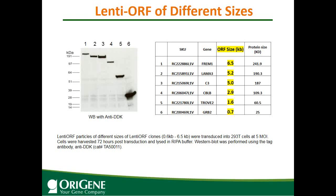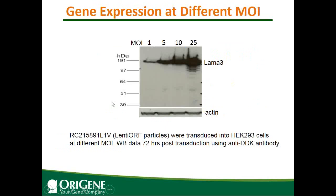This is showing lentiviral ORF expression of different sizes. From lentiviral ORF 1 to 6, the ORF size ranges from 0.7 KB to 6.5 KB. A Western blot with ETA-DDK antibody shows very nice expression for all the different sizes.